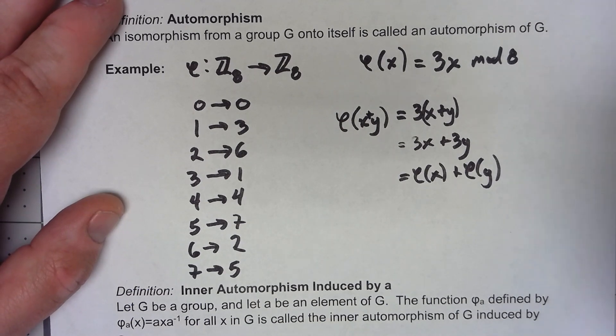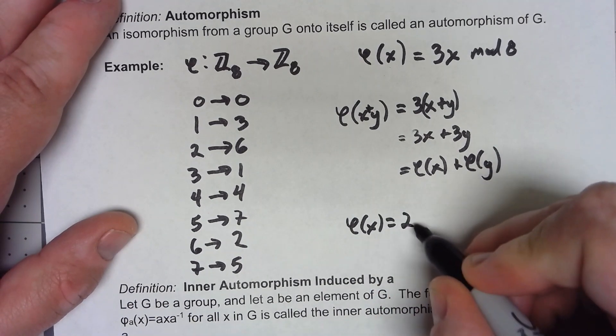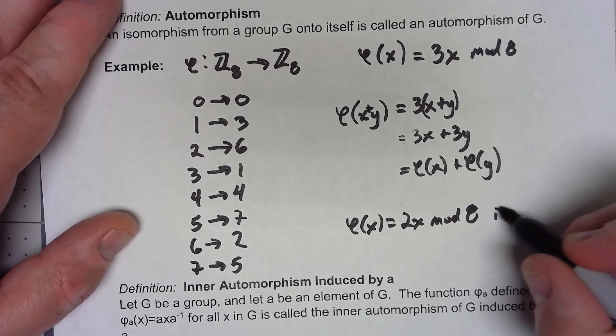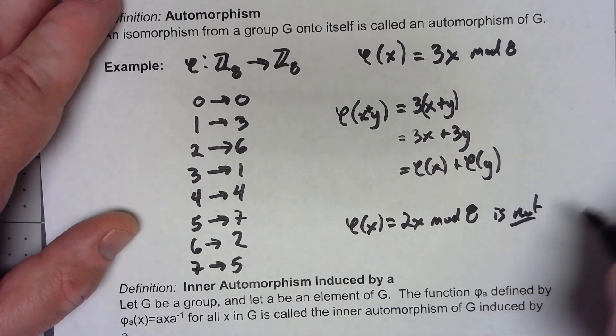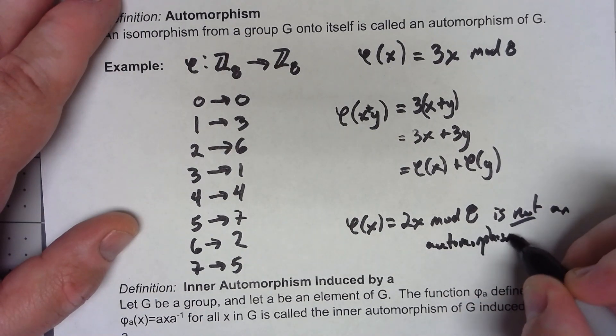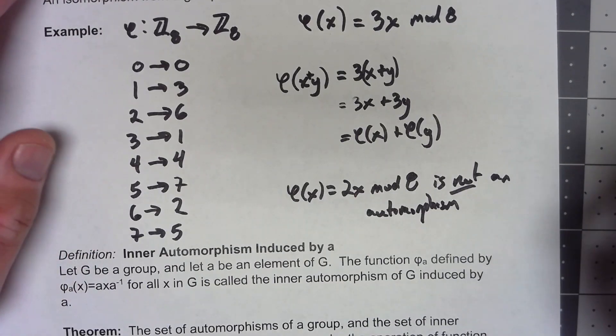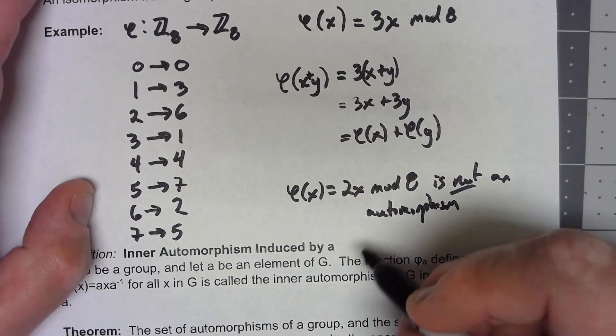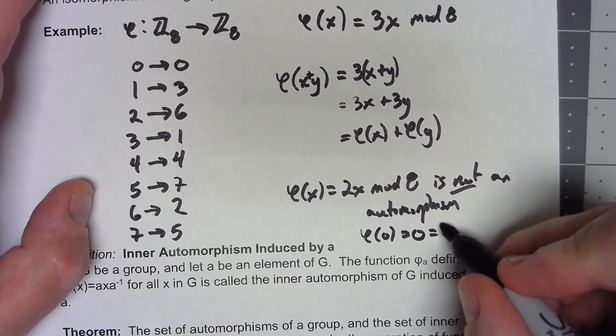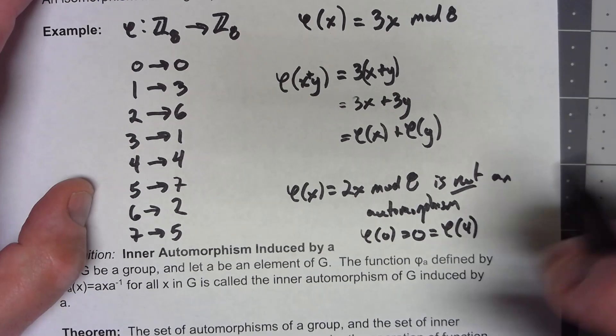Now it's worth noting that if I had tried something like phi of x equals 2x mod 8, that is not an automorphism. And it's easy to see that because that's not going to be one-to-one. Phi of 0 is 0, but phi of 4 would also be 0. It can't be one-to-one.